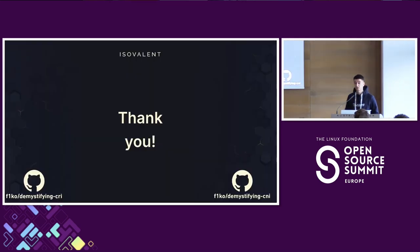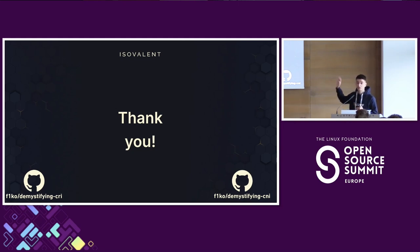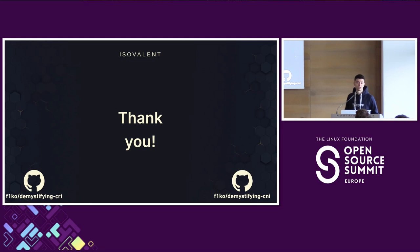Thanks so much. If you want the exact code to try these things yourself, the GitHub repository is shown in the bottom right — it includes a full write-up like a blog post with explanations and commented code. On the bottom left is the Demystifying CRI talk I'll have later today, where there's Go code that's a bit longer, but if you're interested in what the CRI is doing, that's the one to check out.